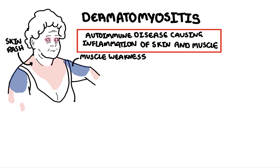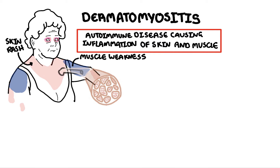Dermatomyositis is an autoimmune disease where the body produces specific types of antibodies and the immune system attacks the muscle. To understand this autoimmune disease we need to recap the anatomy of skeletal muscle tissue.